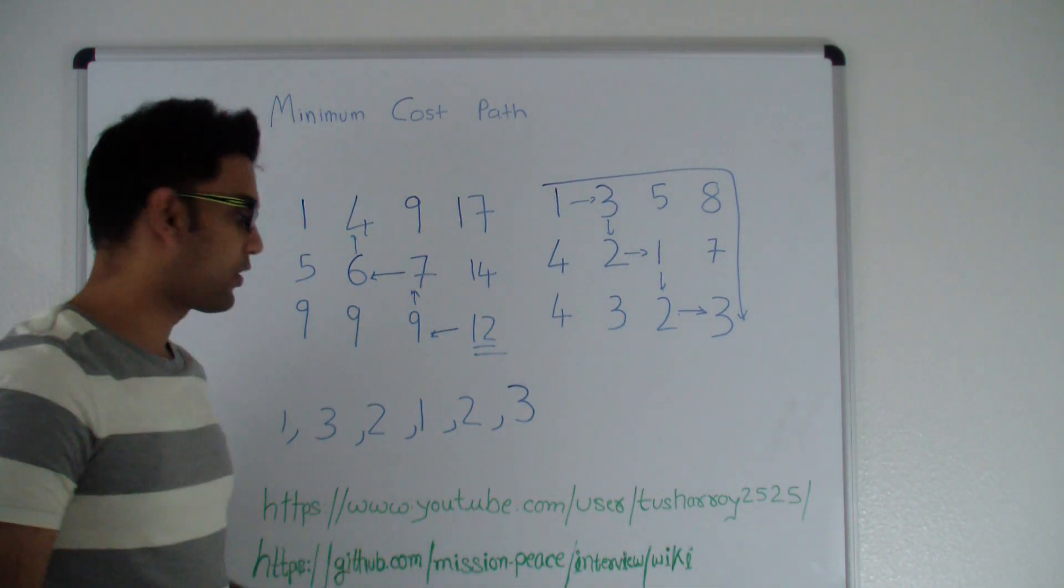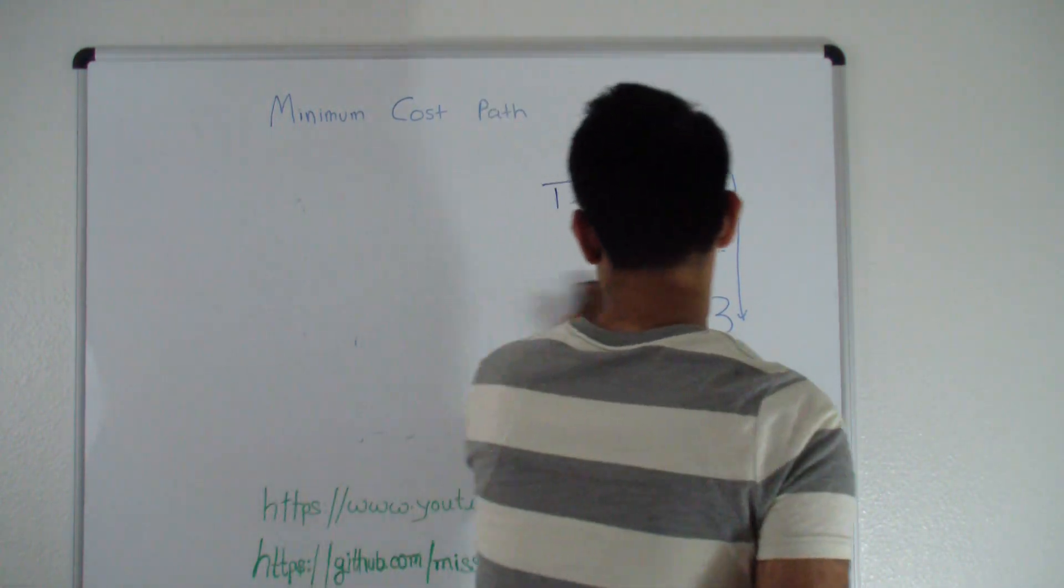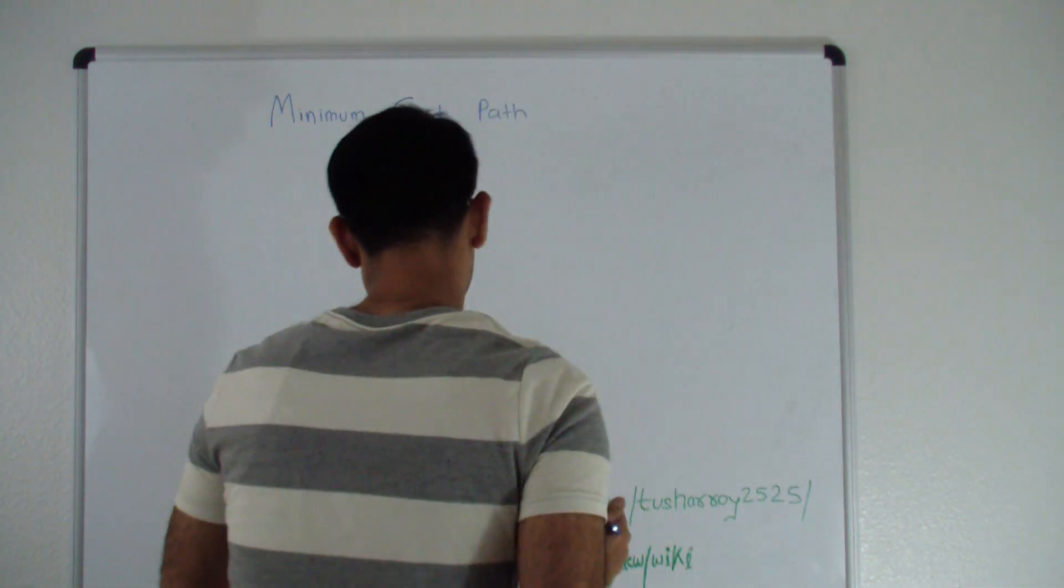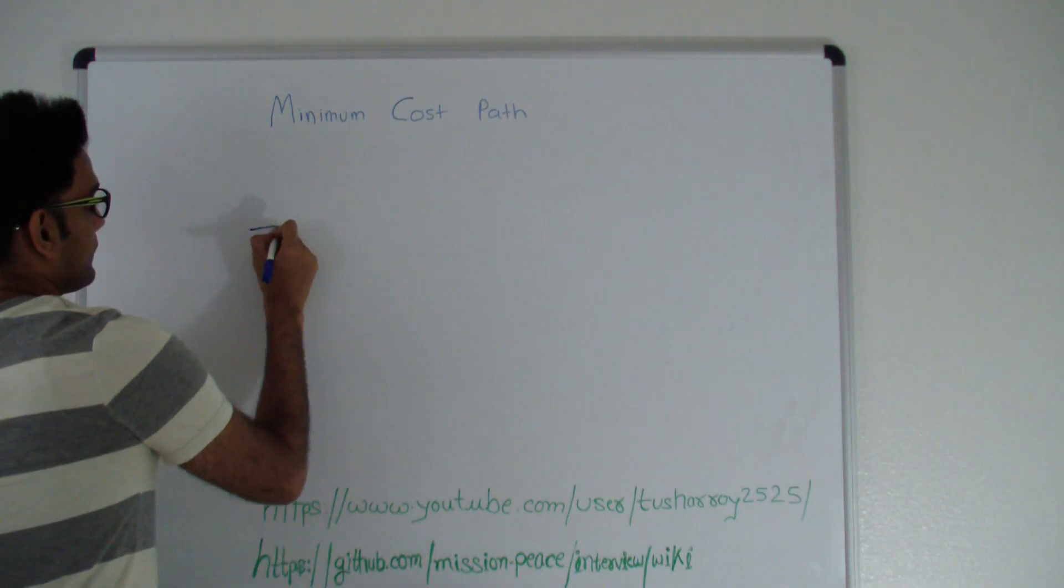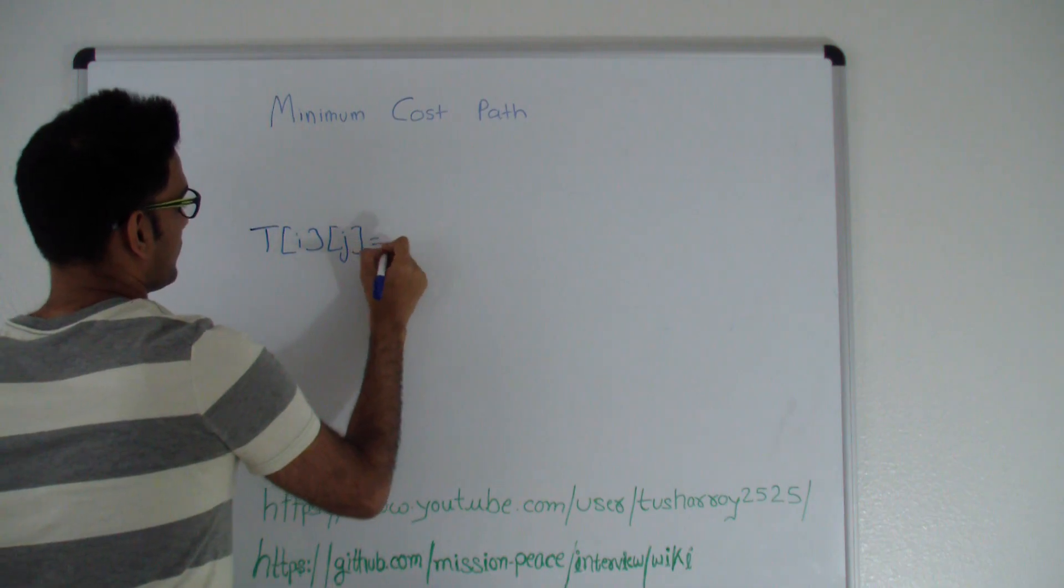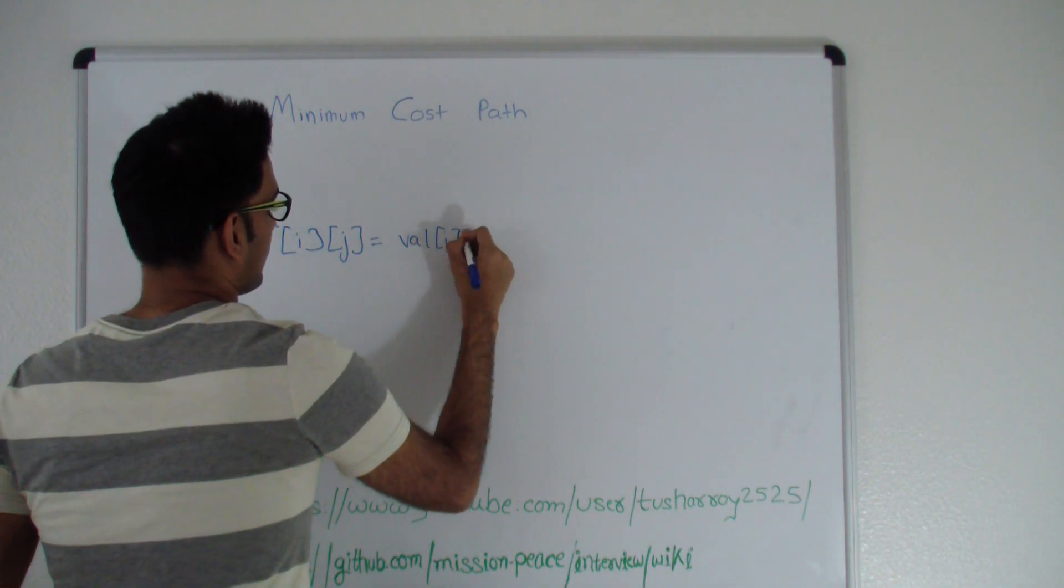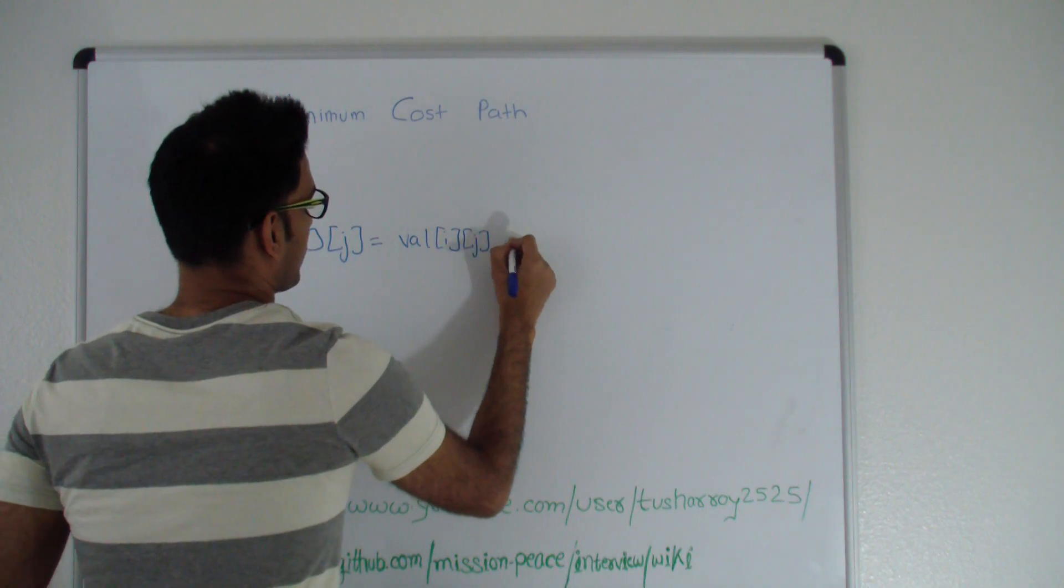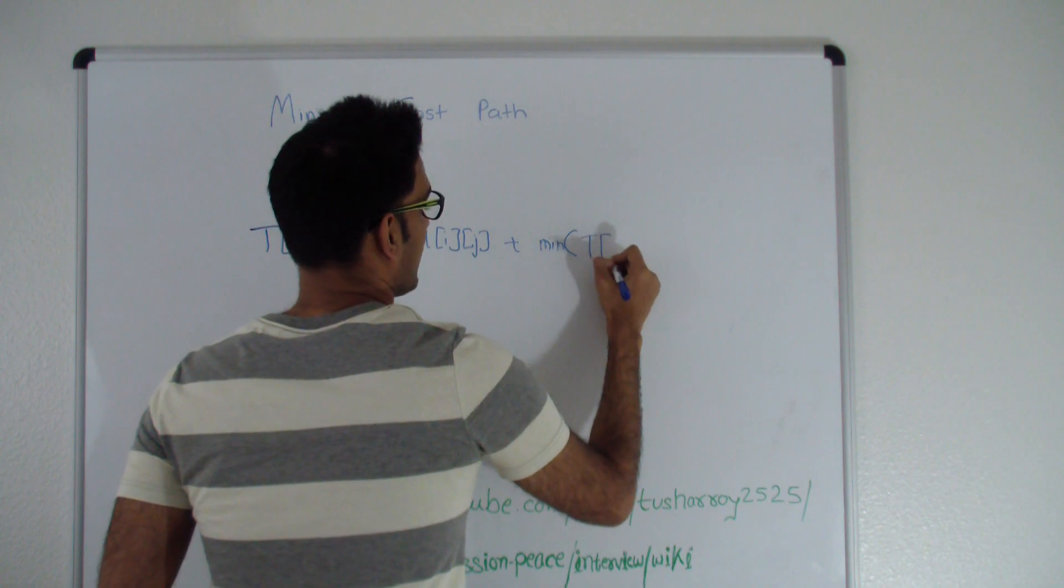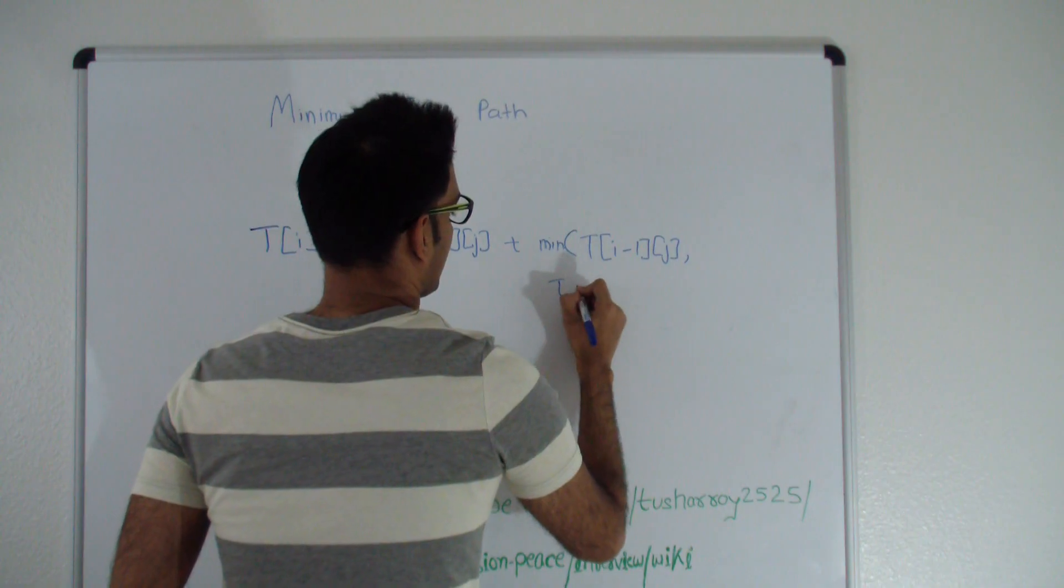T of i j is equal to value at i j plus minimum of item at the top or item at the left.